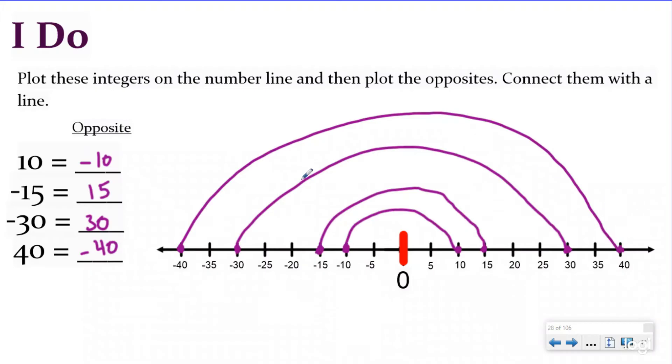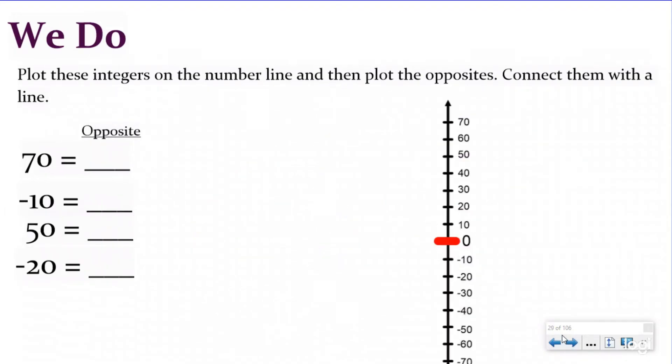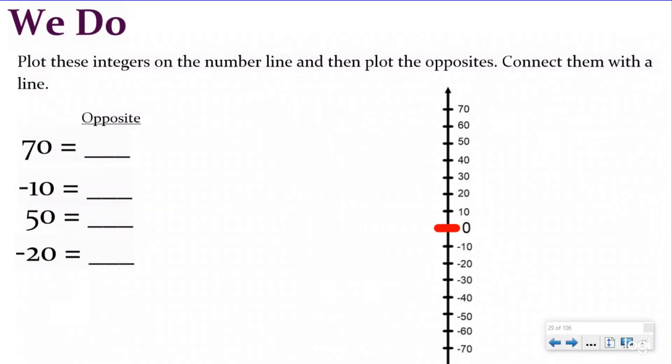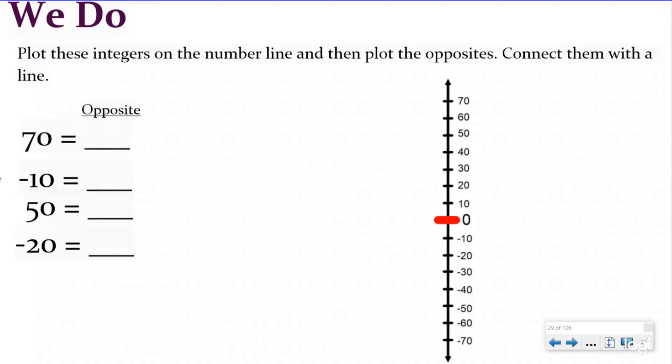And so the rainbow thing is just kind of show you the visual representation of them both being the same distance from zero. There's a lot of symmetry to our number line. For our we do problem, we're going to do the same thing, except we're going to do on a vertical number line. So it says plot the integers on the number line and then plot the opposites, connect them with a line.